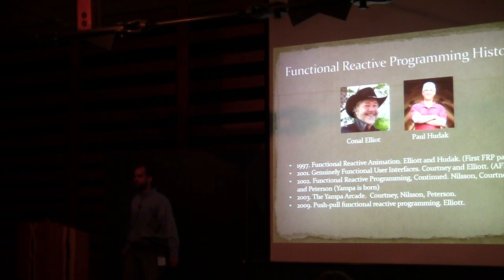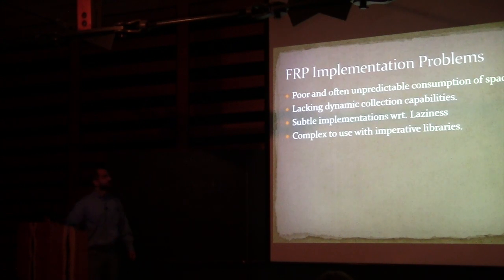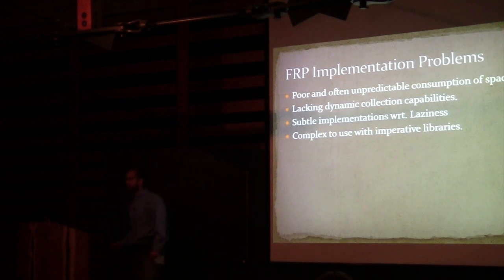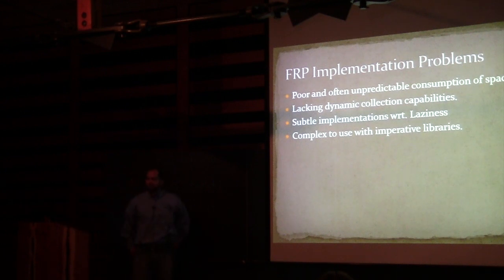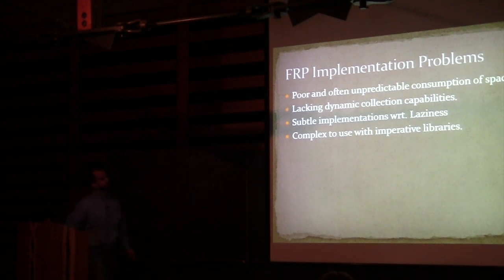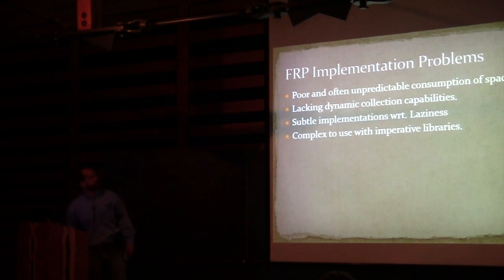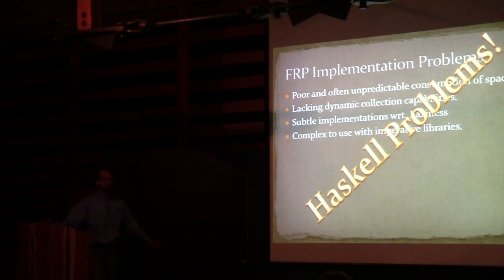You'd think Haskell people would shout about how awesome FRP is, but they don't — because there have been a lot of implementation problems. Poor and often unpredictable consumption of space; lacking dynamic collection capabilities; subtle implementations with regard to laziness; and complex to use with imperative libraries. I would argue these are not problems inherent to FRP — they are Haskell problems.